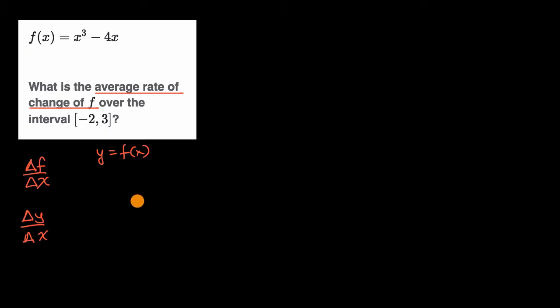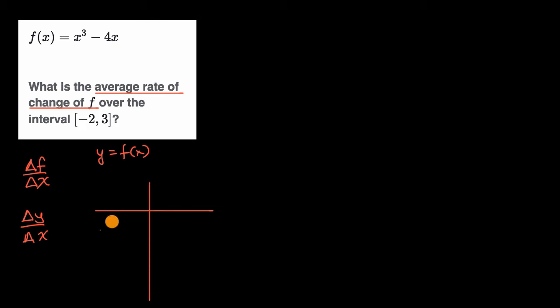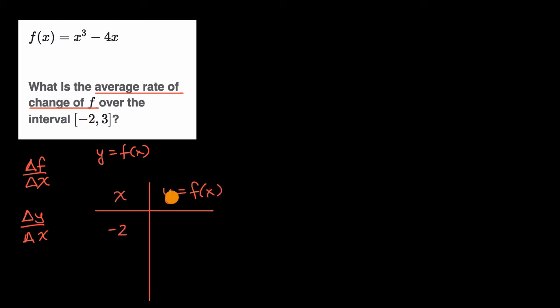We could do this with a table, or we could try to conceptualize it visually. Let's do this one with a table and then connect the dots with a visual. So if we have x here, and then y is equal to f of x, when x is equal to negative two, what is y going to be equal to?